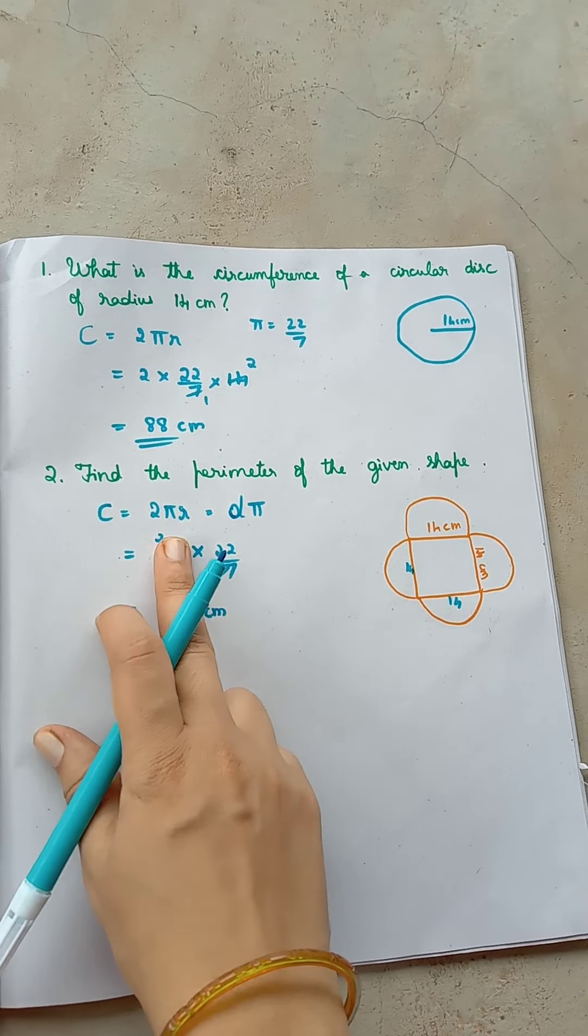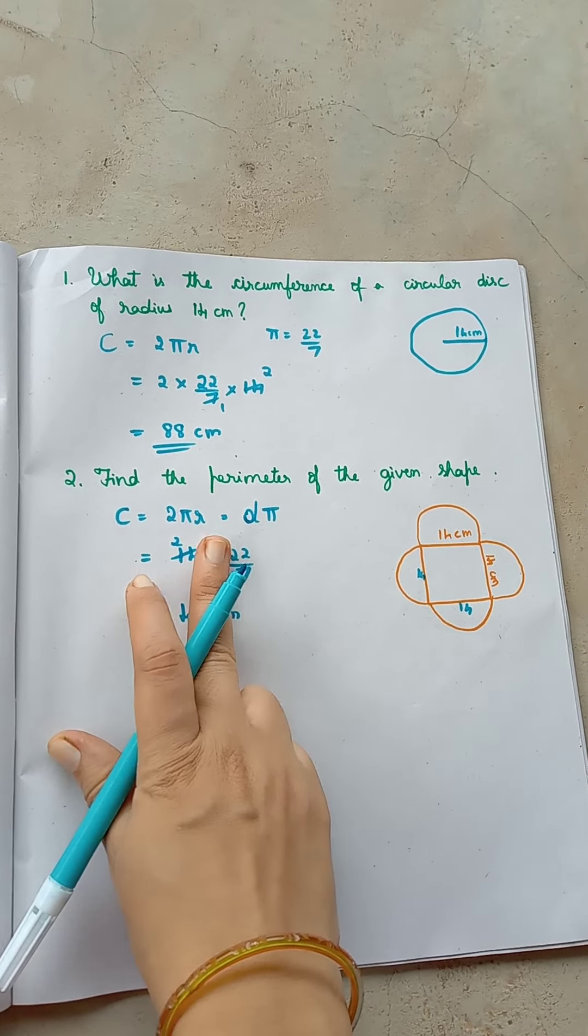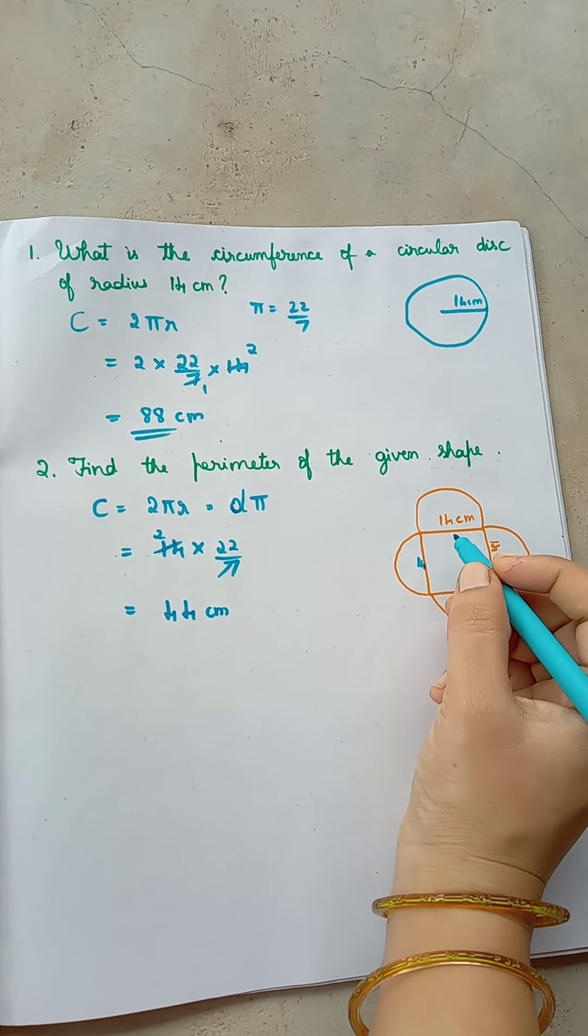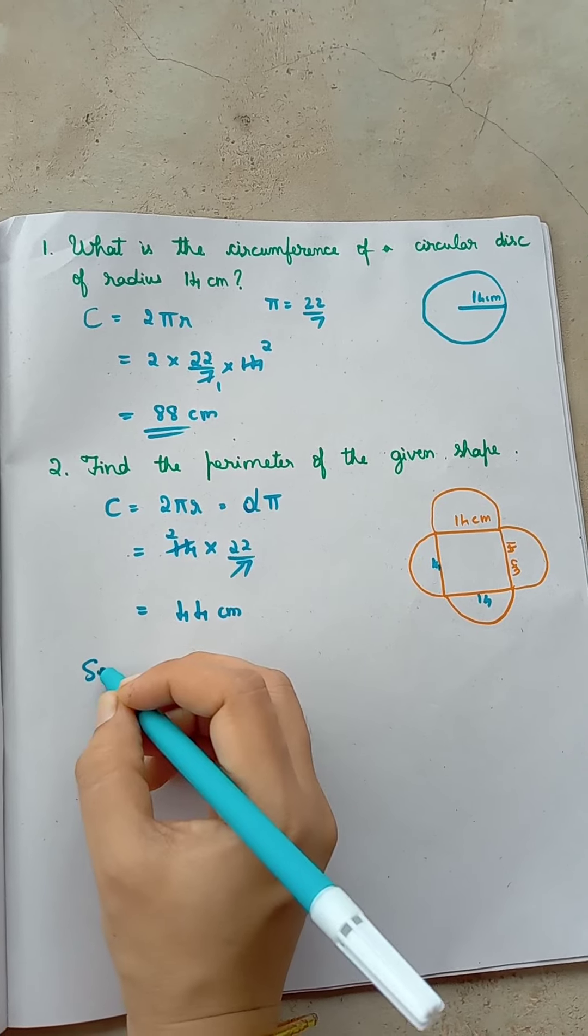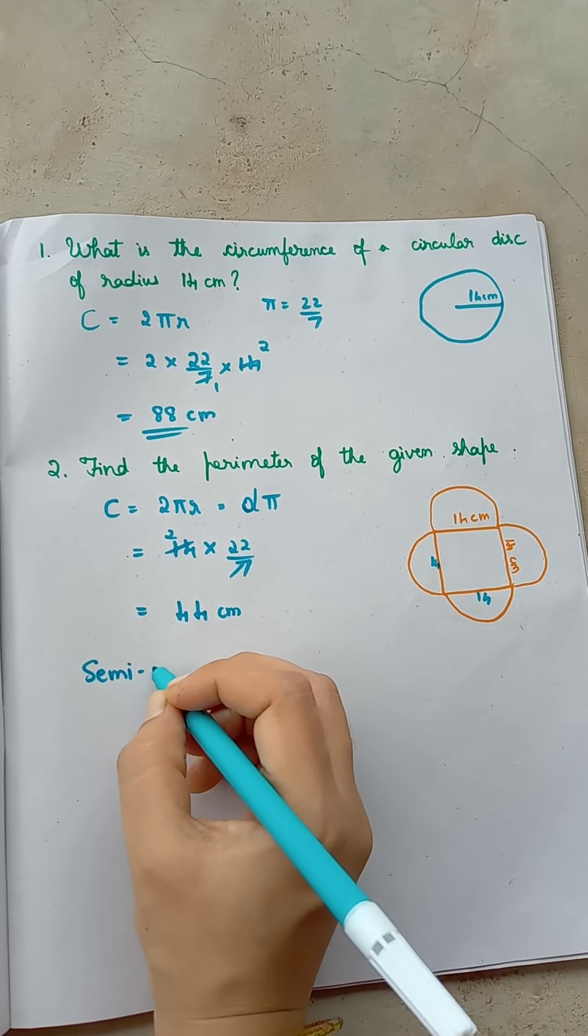This is a circumference of circle but you need here semicircle. So semicircle will be half of this.